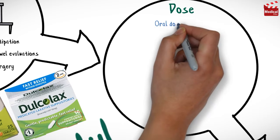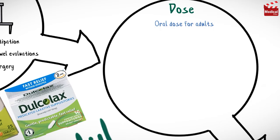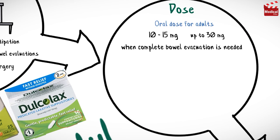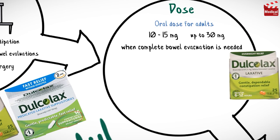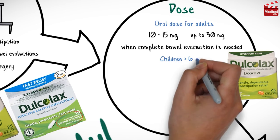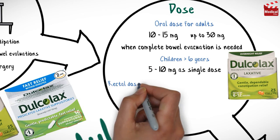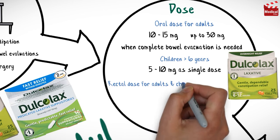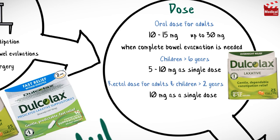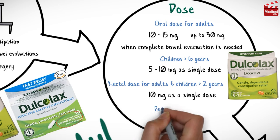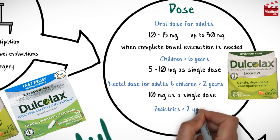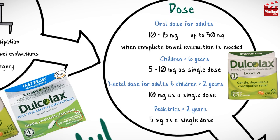The usual oral dose for adults is 10–15 mg, and may be up to 30 mg when complete bowel evacuation is needed. For children older than 6 years, 5–10 mg as a single dose. The usual rectal dose for adults and children older than 2 years is 10 mg as a single dose, and for pediatrics younger than 2 years, the usual dose is 5 mg as a single dose.